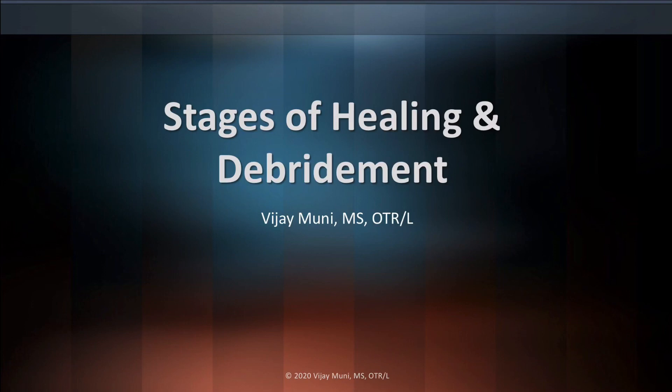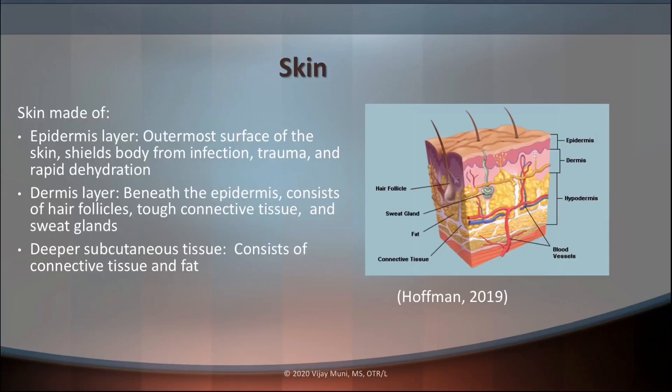So what exactly is the skin? The skin is composed of three layers. The first layer is the epidermis, the second layer is the dermis, and the third layer is the deeper subcutaneous tissue. Each layer plays an important role in the overall function of the skin.